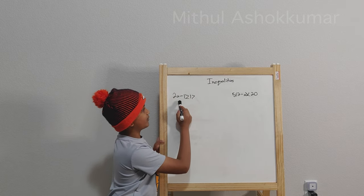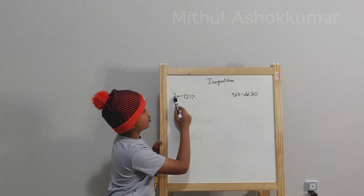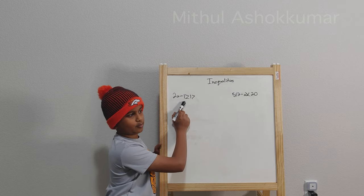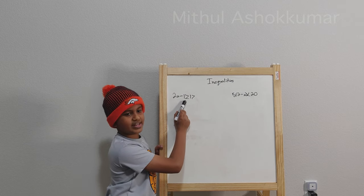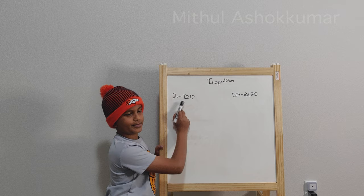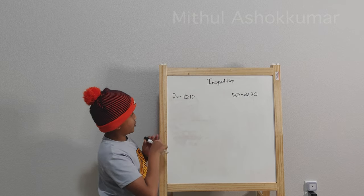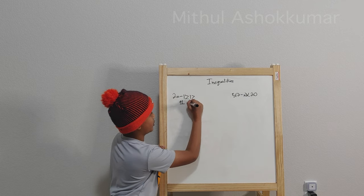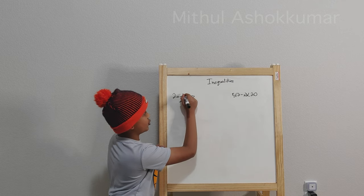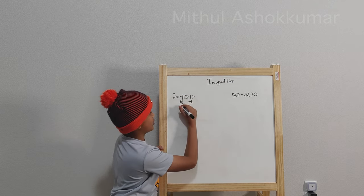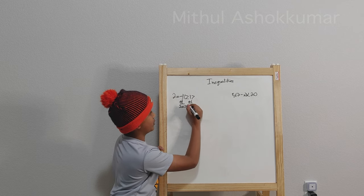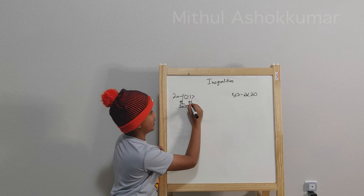So how do I get 2x by itself? We are going to add 1, since this one here is a negative one. So we'll just add 1 here and add 1 here. These two ones cancel out, so then we'll have 2x on the left side, greater than or equal to 18.